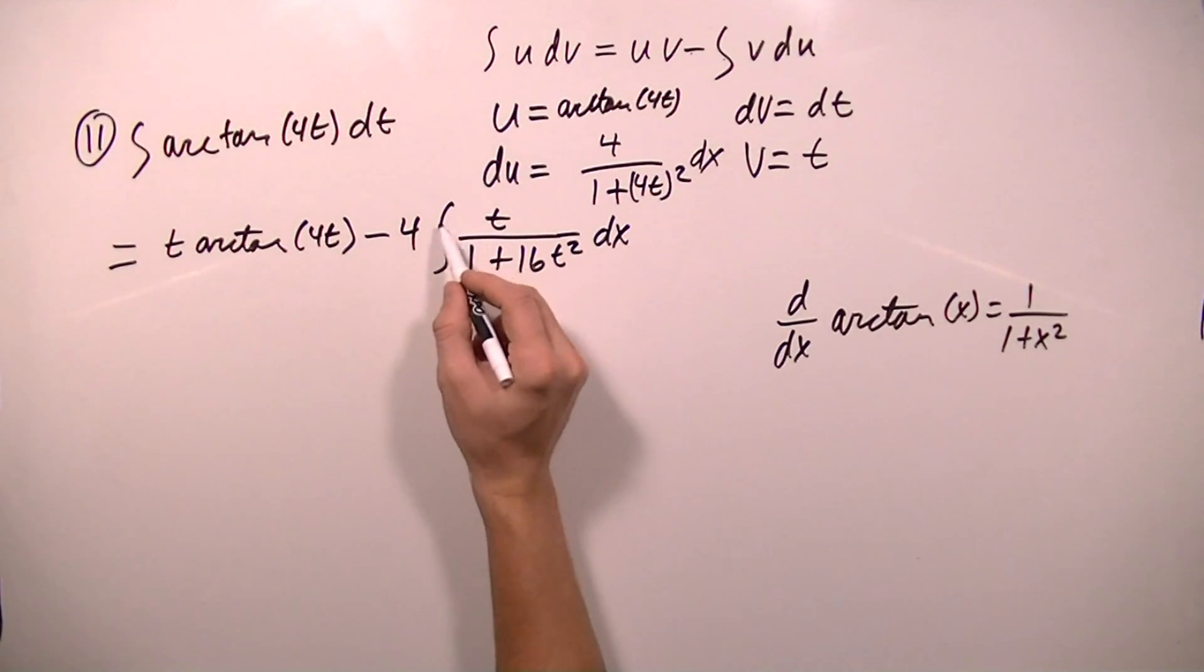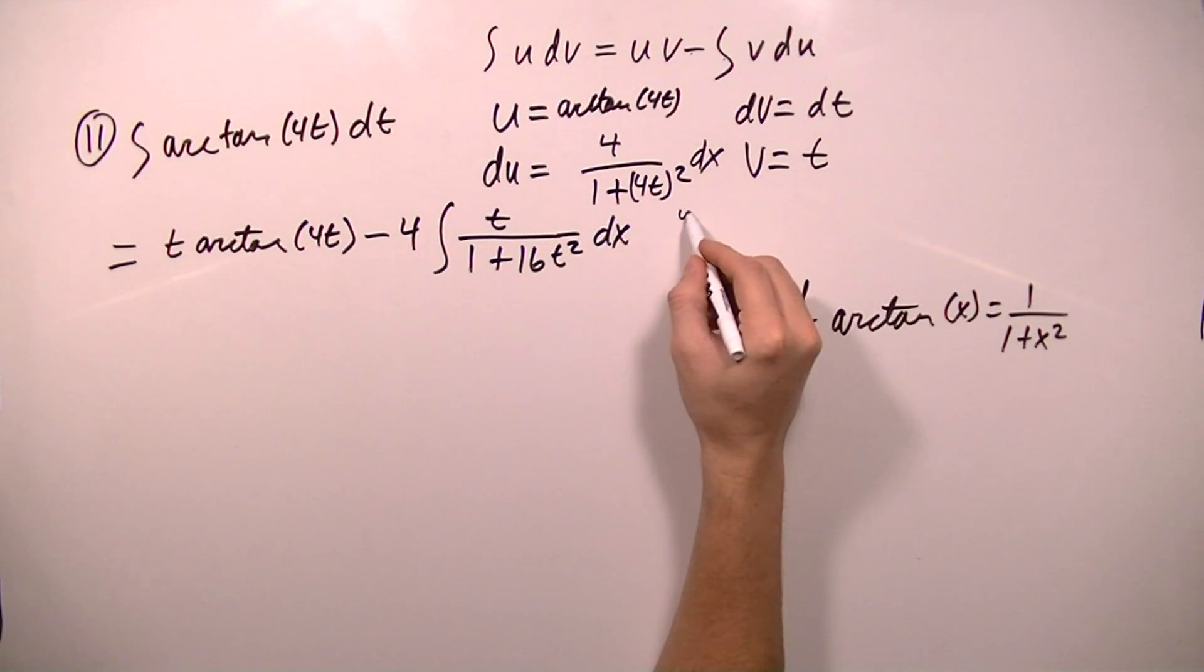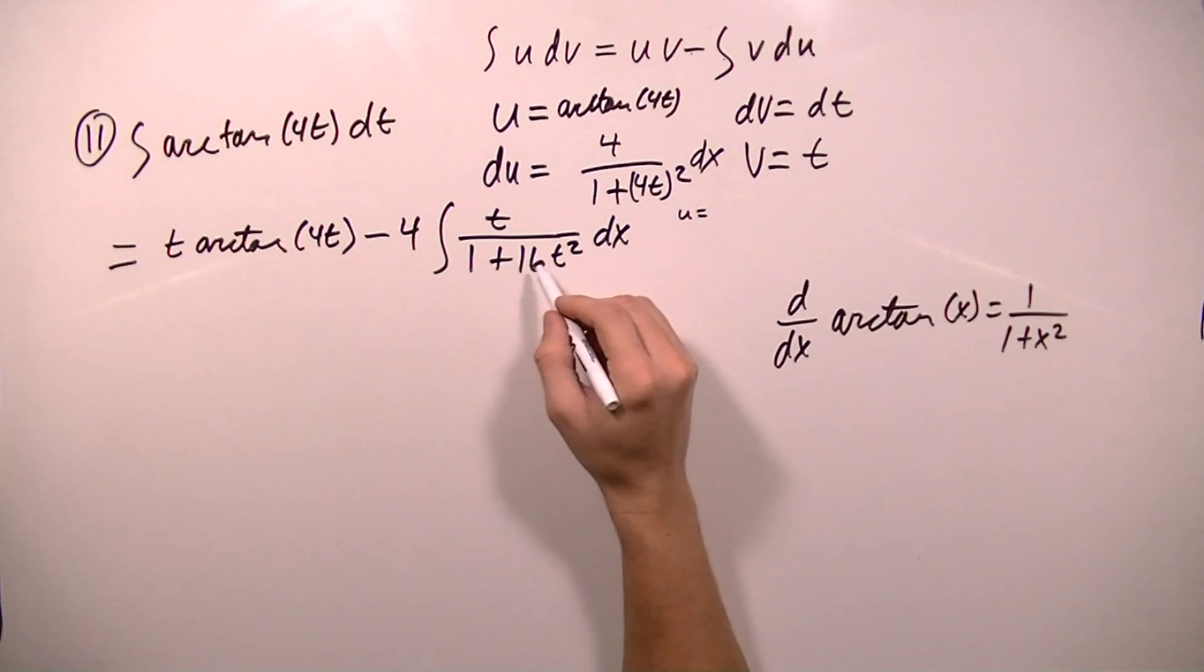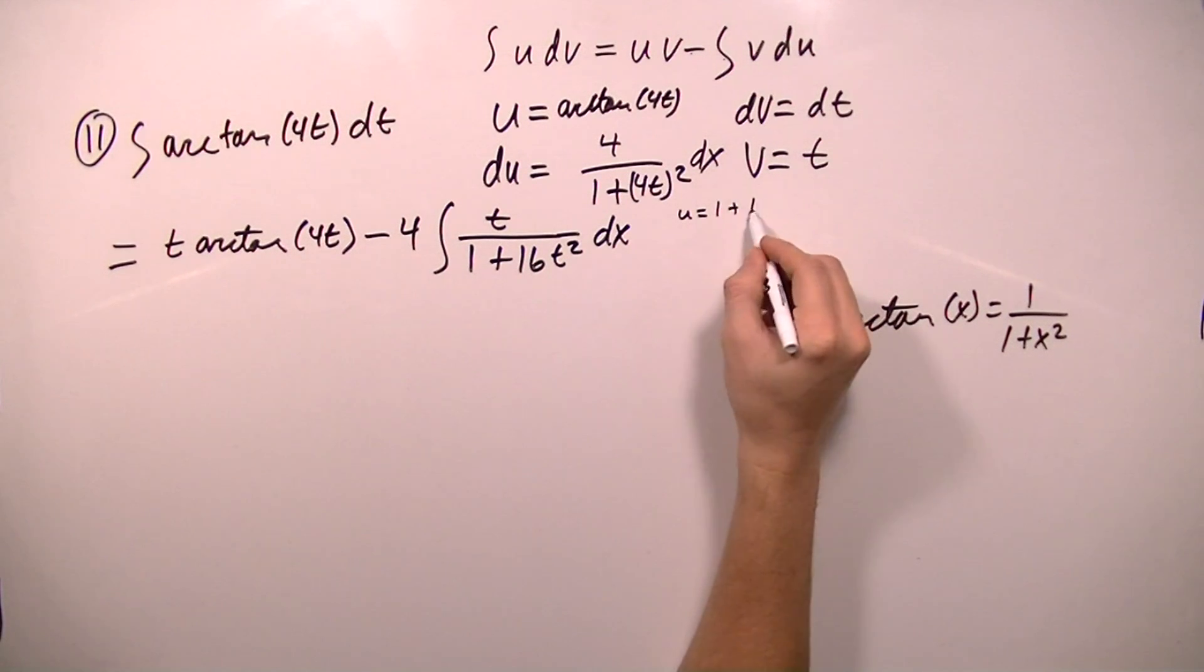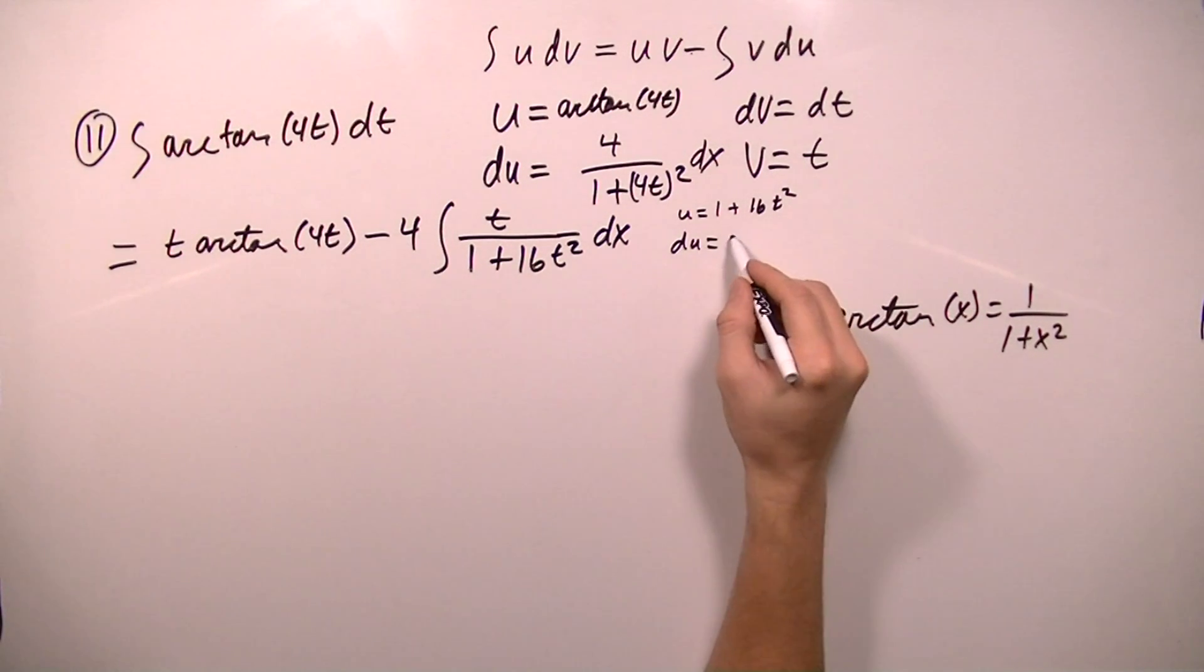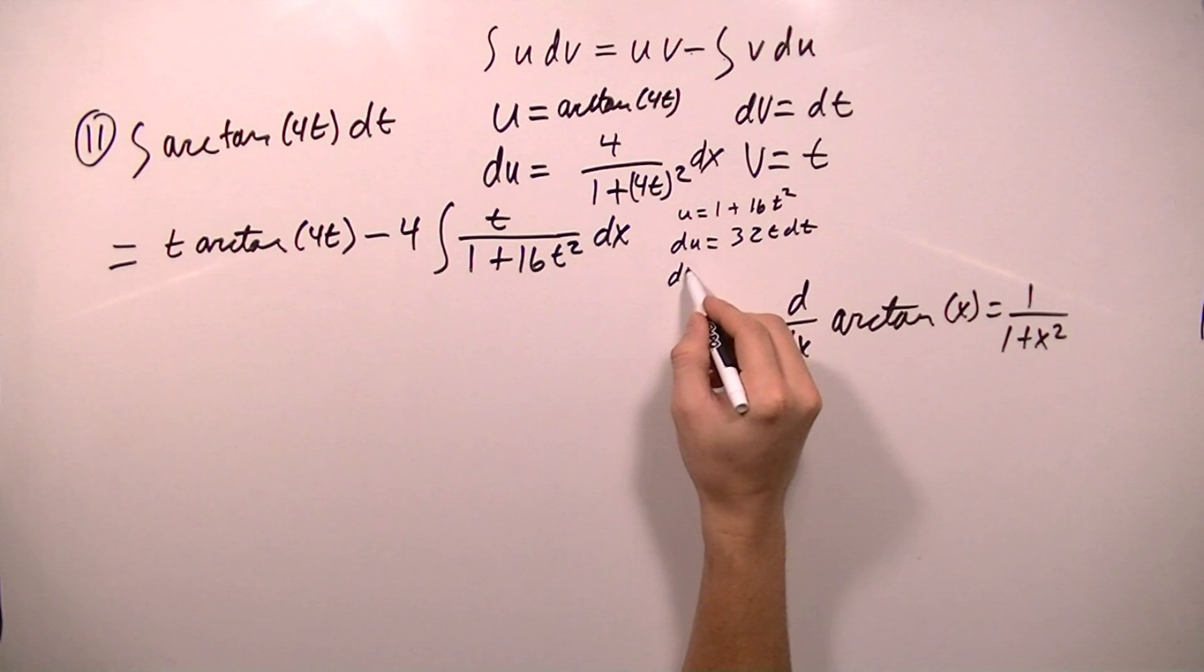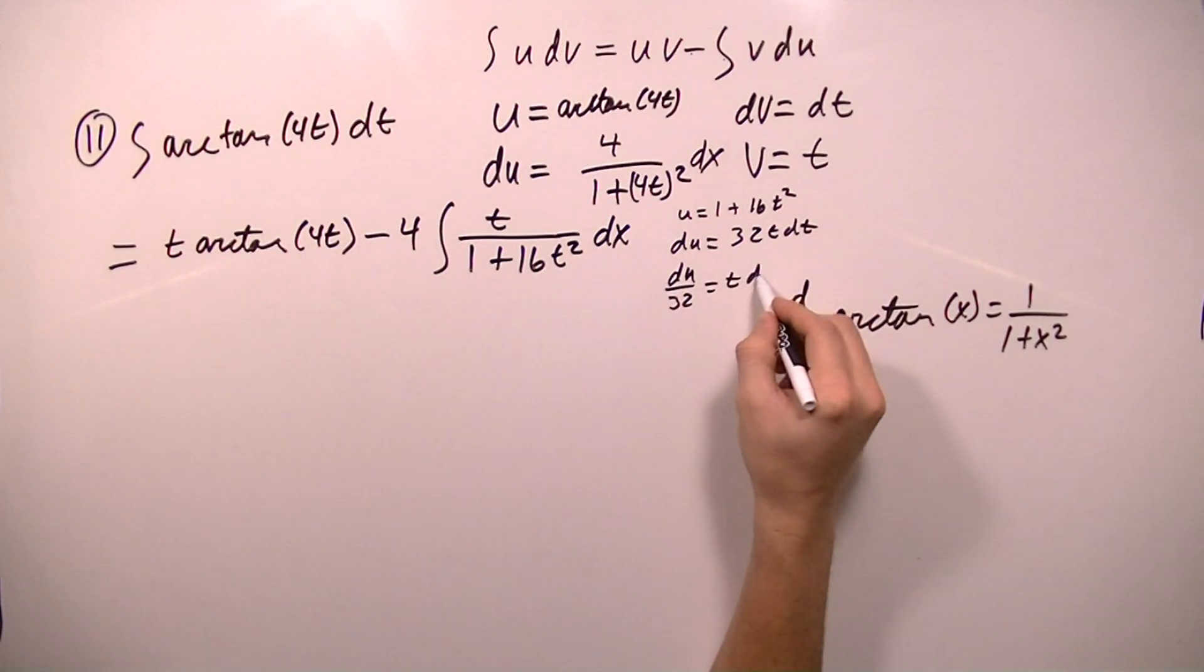Now in order to be able to take this integral, I'm going to have to use the substitution rule. And I'm going to say that u equals 1 plus 16t squared. And du will equal 32t dt. And I'm going to divide both sides by 32, and I get du over 32 equals t dt.